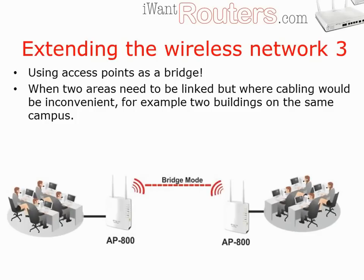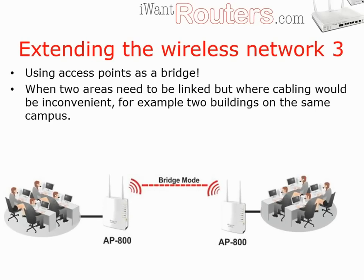Wireless access points can also be used to connect locations together. For example, if you have two buildings in a campus situation 50 meters away from each other with an access road in between, it would be difficult to lay a cable between the two. One option is to attach appropriate aerials to the outside of both buildings, pointing at each other, and attach those aerials to wireless access points so that the wireless network is beamed between the two buildings.